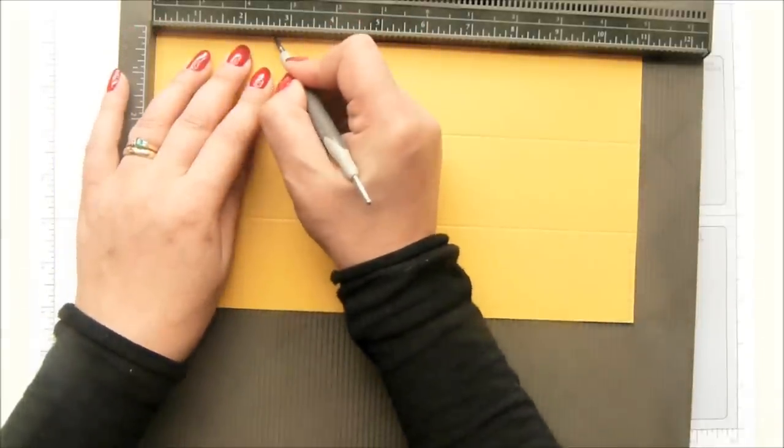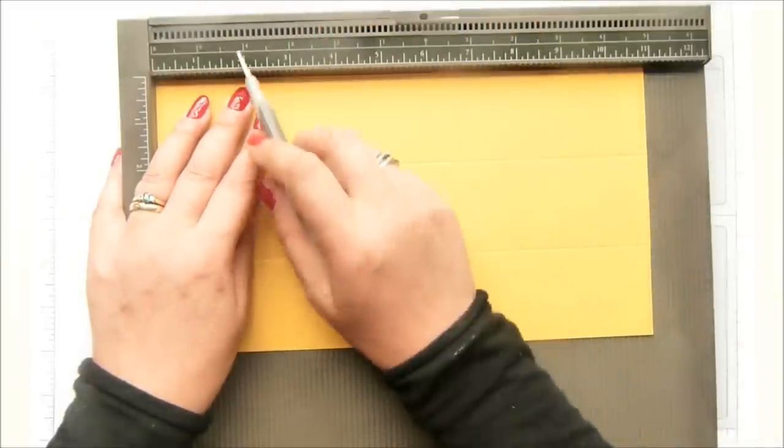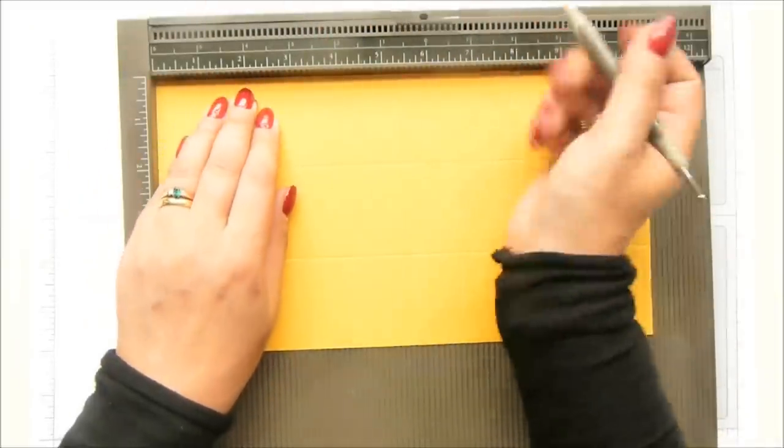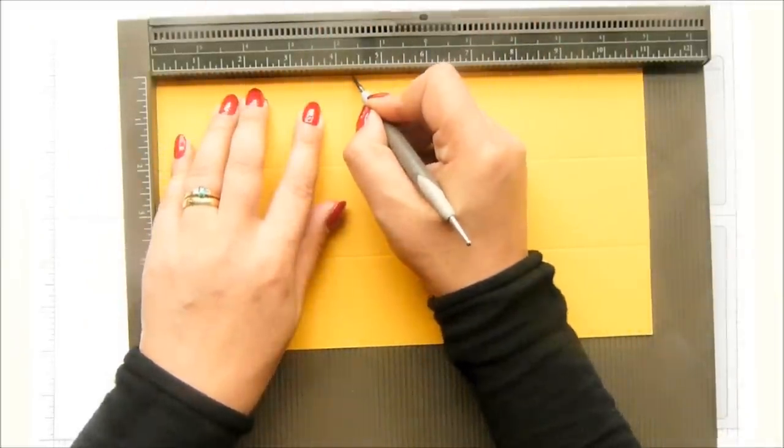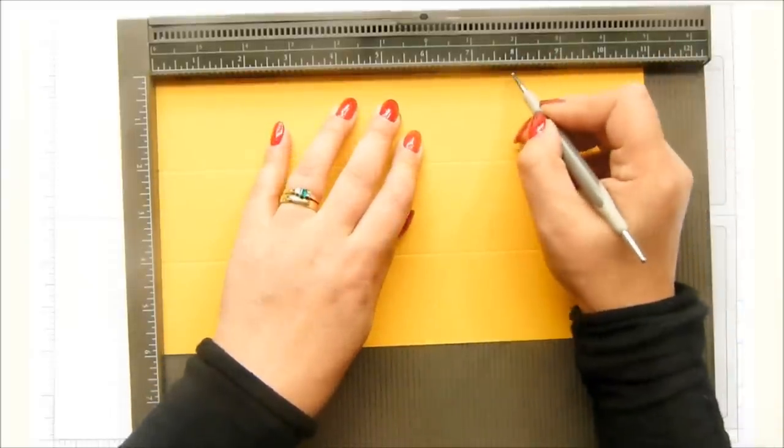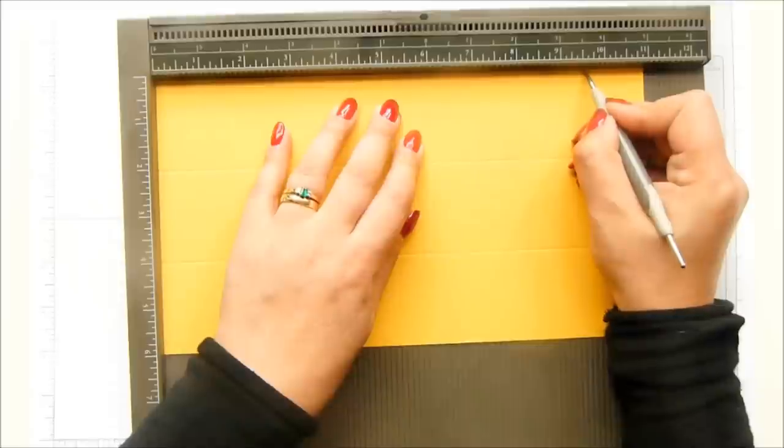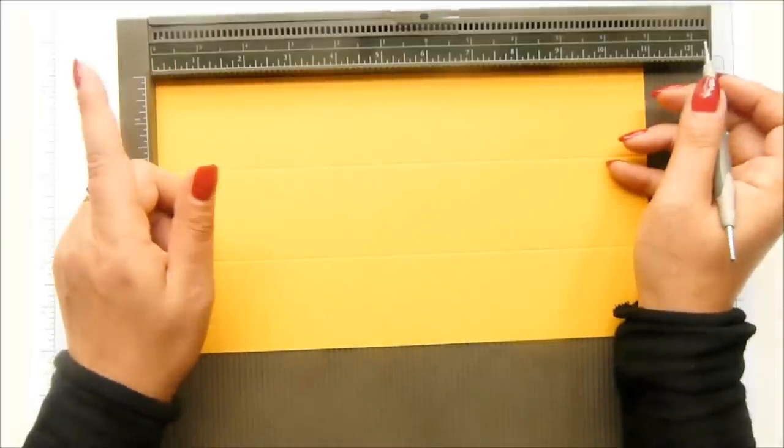So seven eighths of an inch, two and five eighths of an inch. And the light is, I'm going to move this because the sunlight is reflecting straight on here. Two and five eighths, four and three eighths, six and one eighth, seven and seven eighths and nine and five eighths.